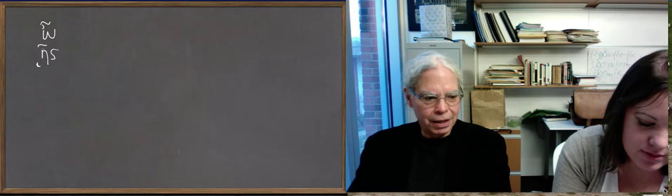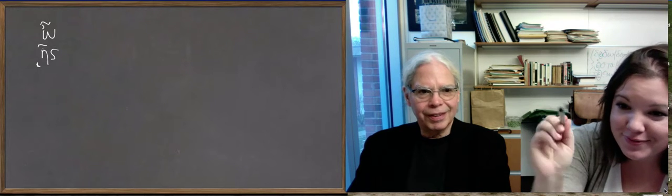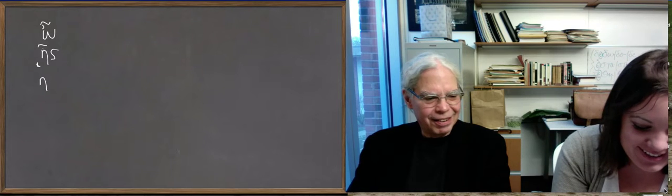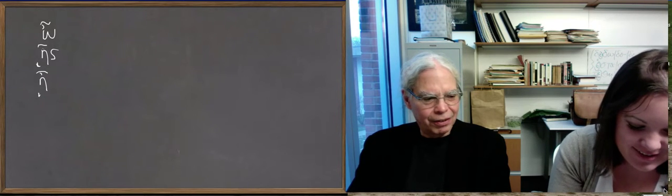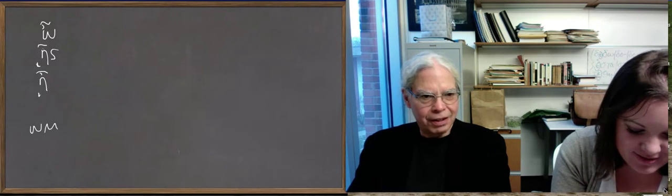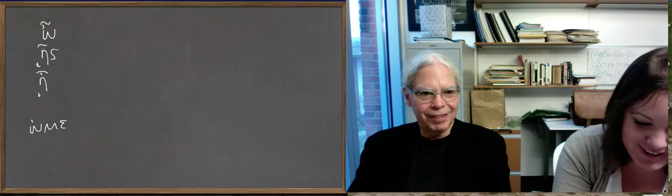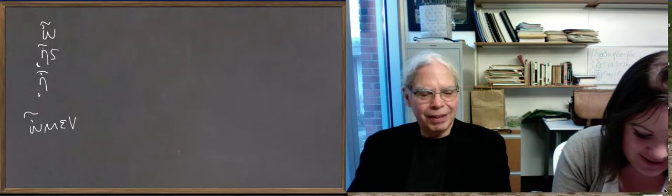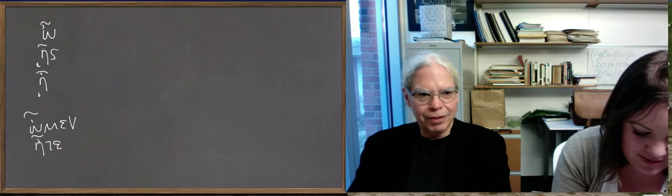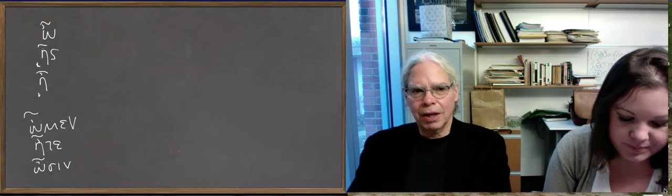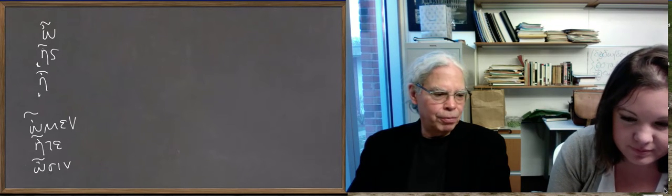And then ὦμεν, ἦτε circumflex, and ὦσι. So effectively what you have there is the endings of a verb but no root.